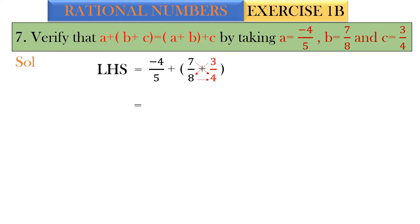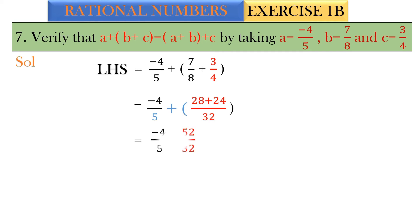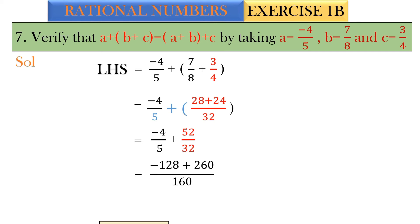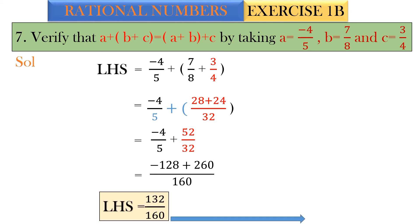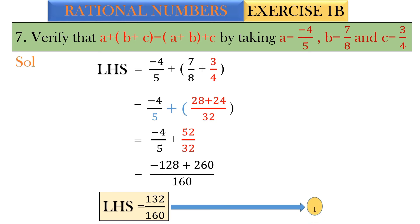Cross multiplying the inner bracket: minus 4 by 5 plus (8×3=24 and 7×4=28, giving 28+24=52 over 32). So we get minus 4 by 5 plus 52 by 32. Cross multiplying again: minus 4 × 32 = minus 128, and 5 × 52 = 260. That gives (minus 128 + 260) by 160, which equals 132 by 160.